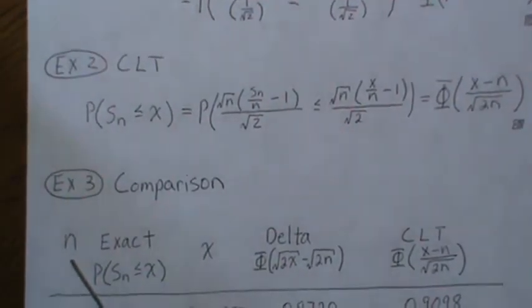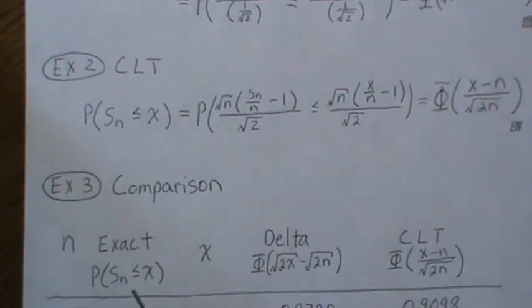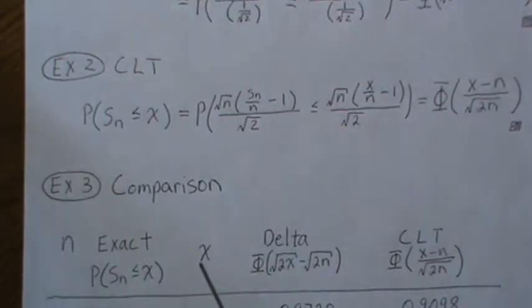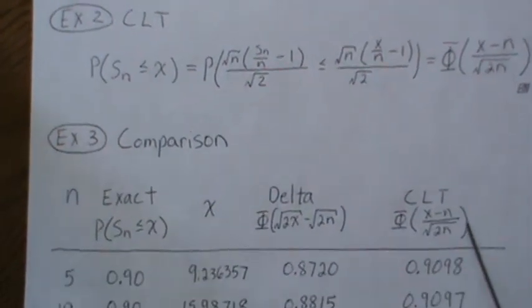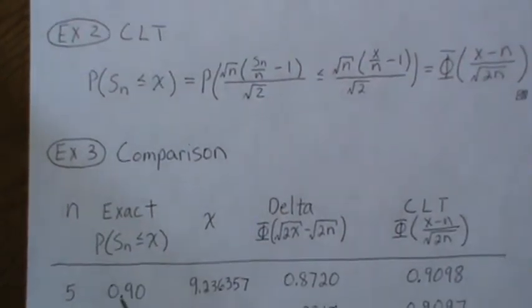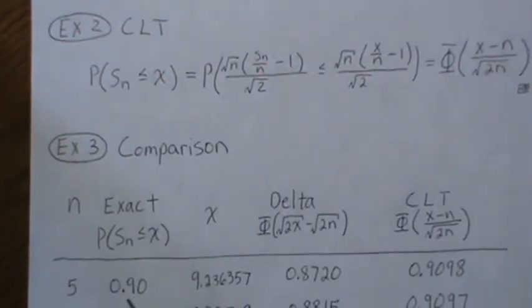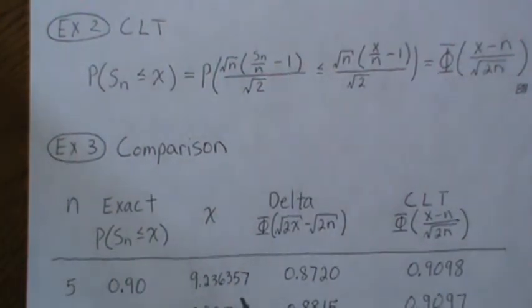Here we're going to look at how sample size affects the approximations versus the exact. We're going to find the exact x value that makes that easy, then calculate and compare it with the delta method and the Central Limit Theorem. With n equals 5, and we want this probability to be exactly 0.9, that cutoff is 9.2 something.